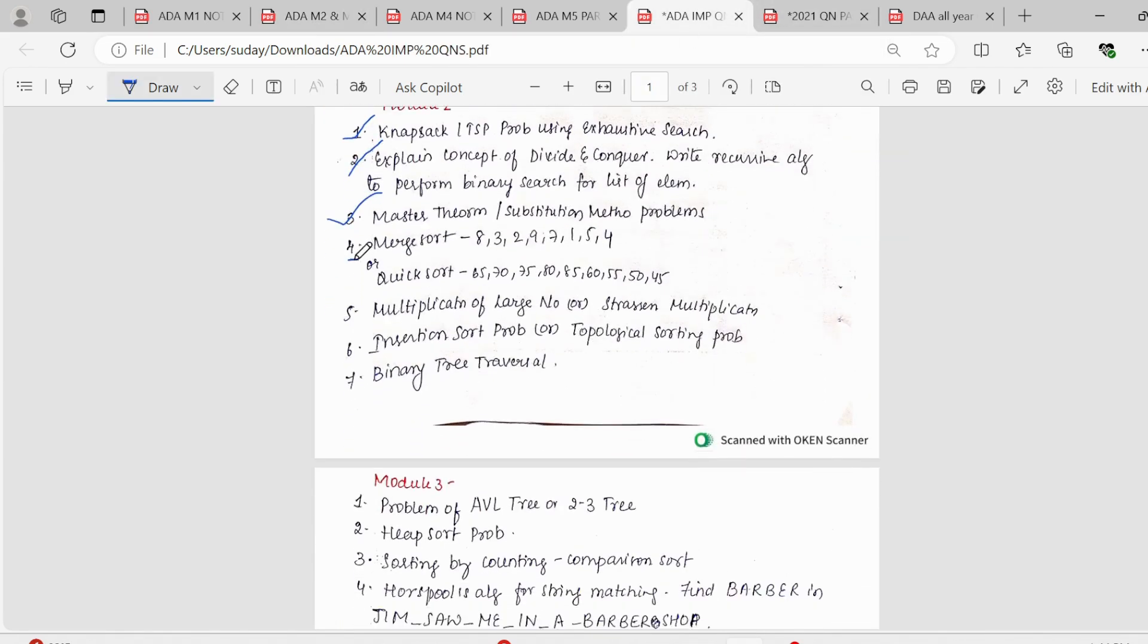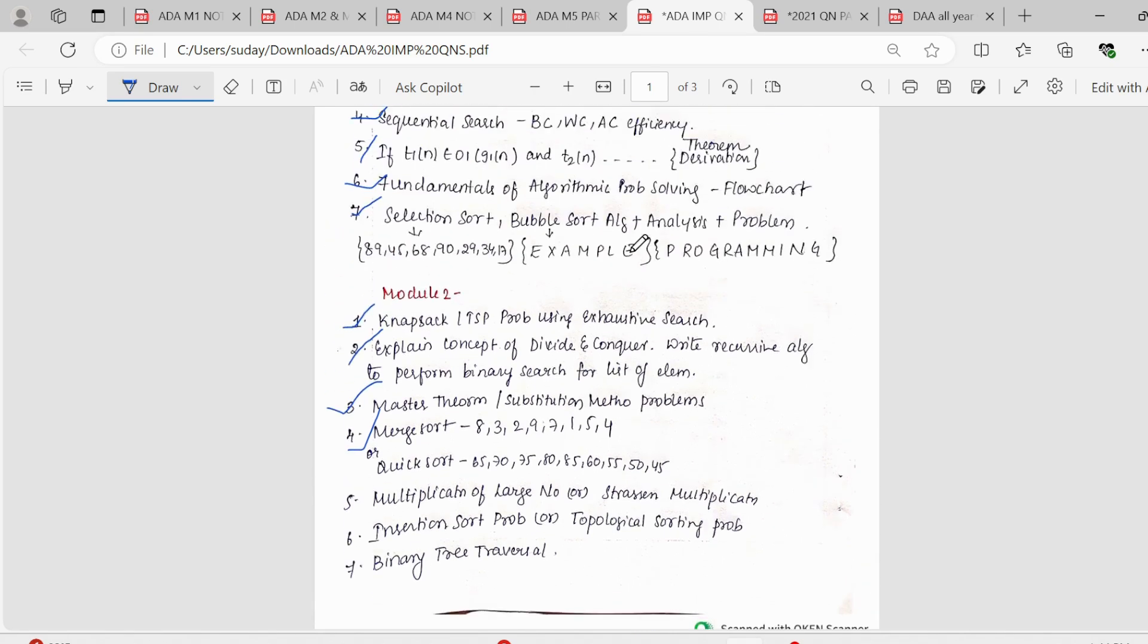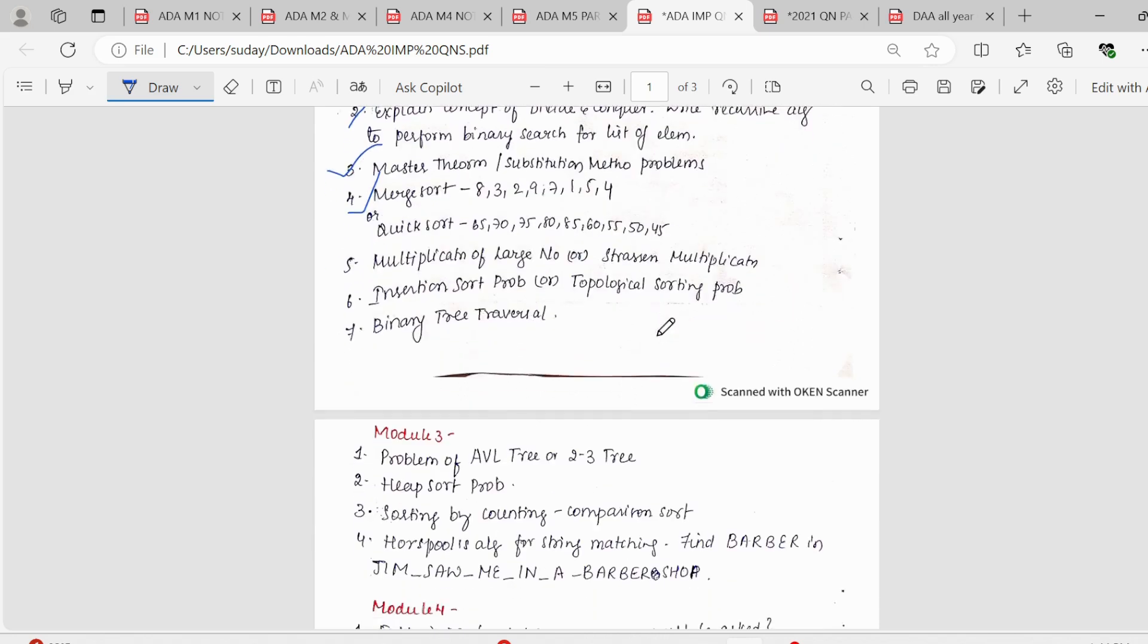Here in the video, I have tried covering all the possible questions. So I've taught nearly nine to ten problems for master theorem and three problems for the substitution method. So any question in exam would be from this only. Next, we have merge sort or quick sort. So merge sort or quick sort is again a complex topic. So if you know how to write the algorithm properly, how to perform the analysis and how to give an example, how to perform the operation, then it'll be easy. So out of these two, one could be asked. Then we have multiplication of large number and Strassen's multiplication. This topic is new because it was not there in previous year papers.